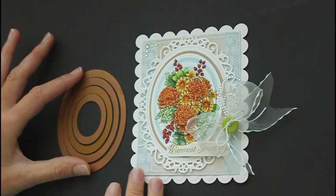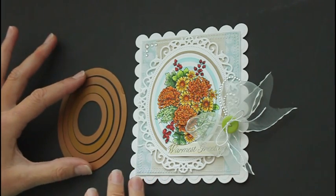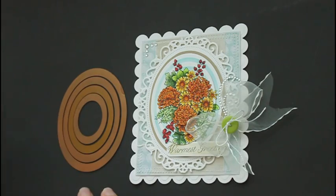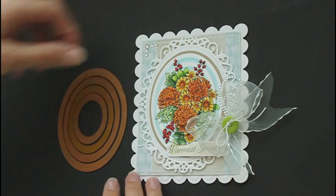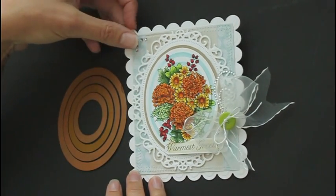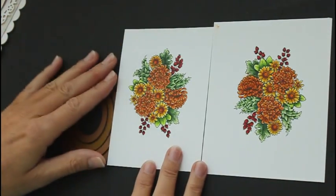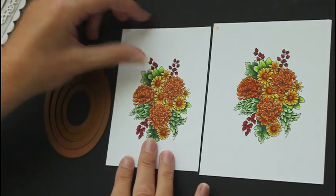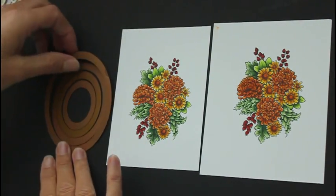For my sample, to cut the image, I use the large classic oval dies from Spellbinders and the image is from Flourish's Autumn Blossom Set. To begin, you will need two of the same images and, of course, the nesting dies.